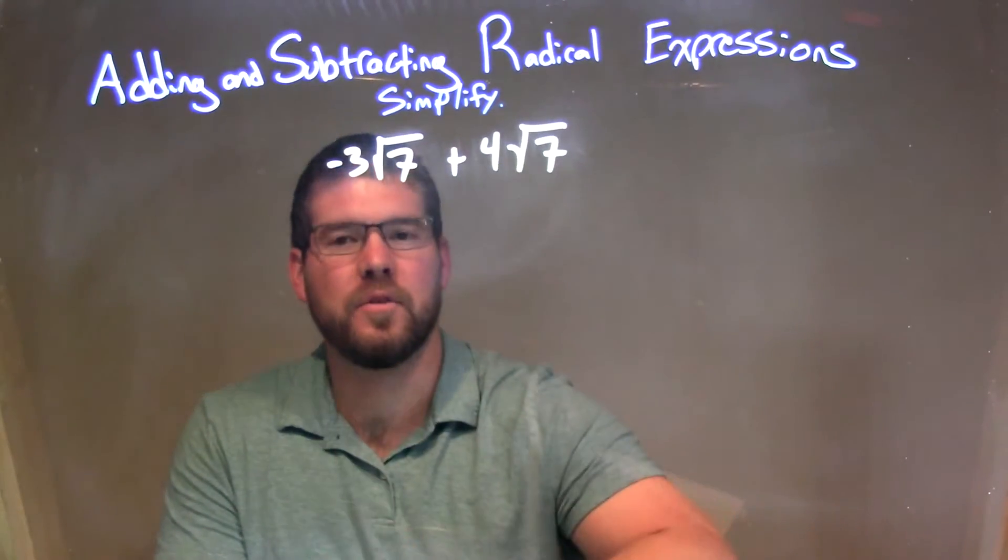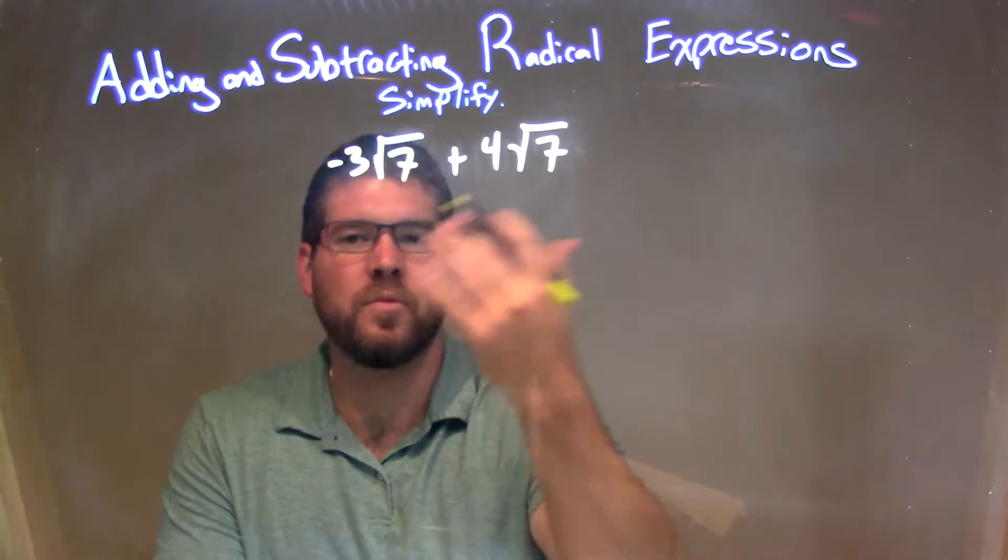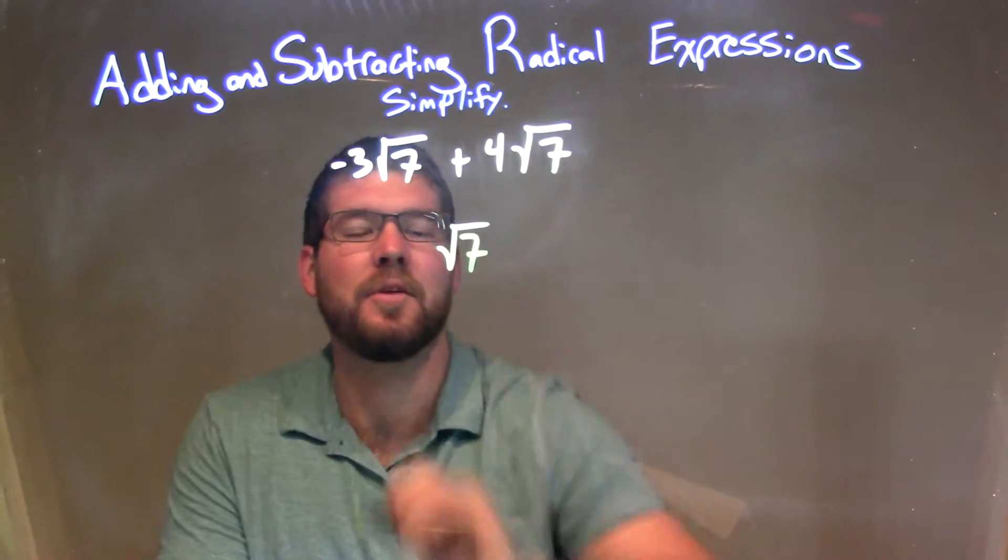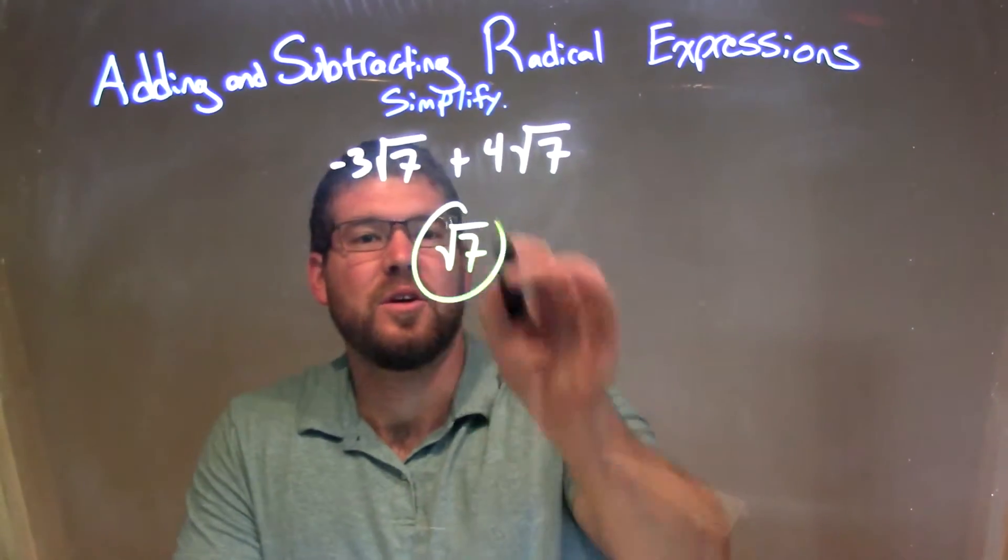Negative 3 plus 4. This is a positive 1. So positive 1 times the square root of 7, and it's just the square root of 7. That's it, pretty simple.